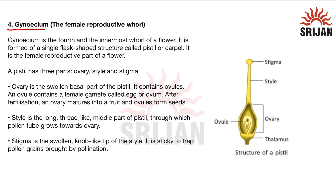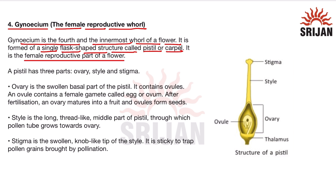The fourth whorl is the gynoecium, or the female reproductive whorl. It is the innermost whorl of the flower and is formed of single flask-shaped structures called pistils or carpels. A group of pistils or carpels forms the gynoecium, which is the female reproductive part of a flower.